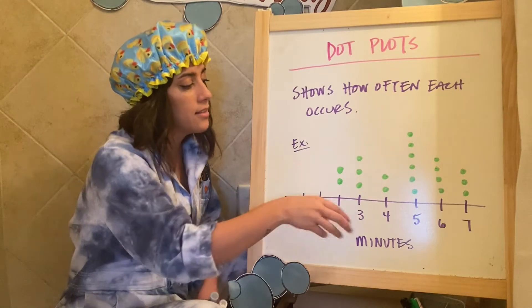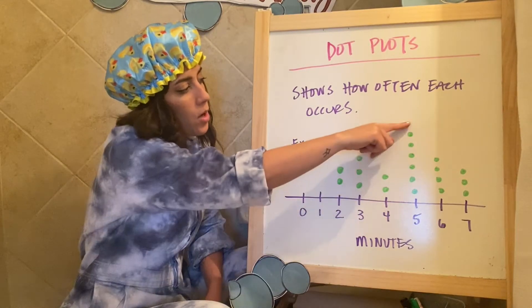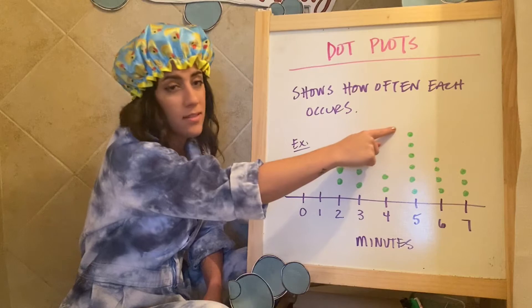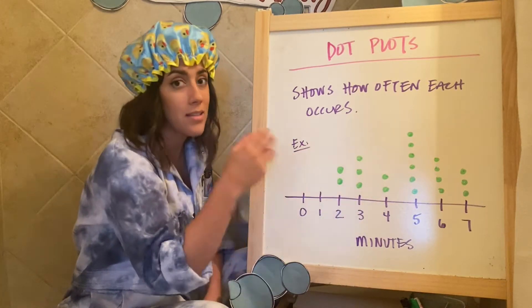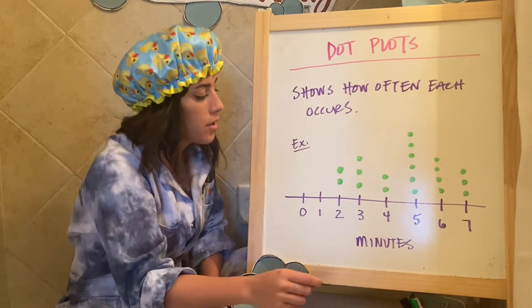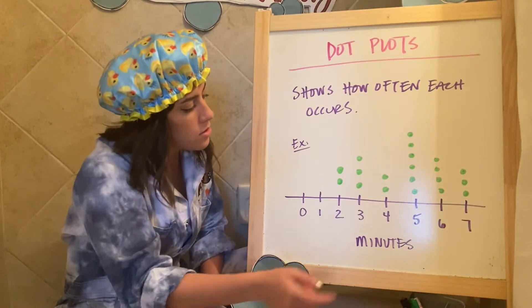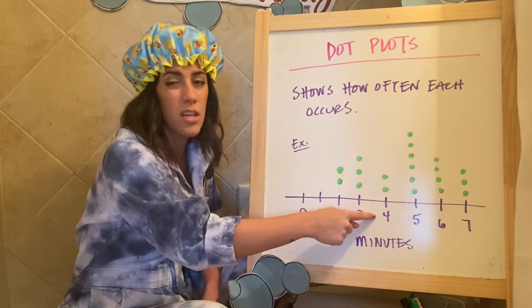That's all it is. So looking at this data, you can see quickly which one has the most, because it's the highest. So five minutes has the most amount of people, or that's the most amount of people that take to eat breakfast. And then the least, you can see that the least amount of people take about four minutes.